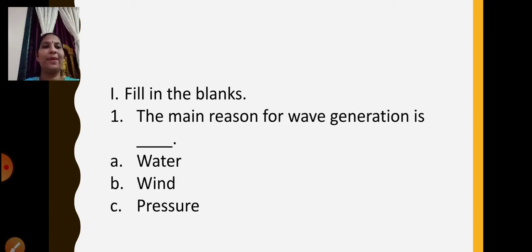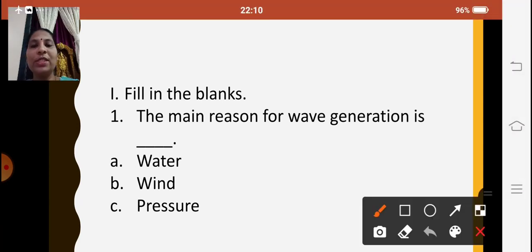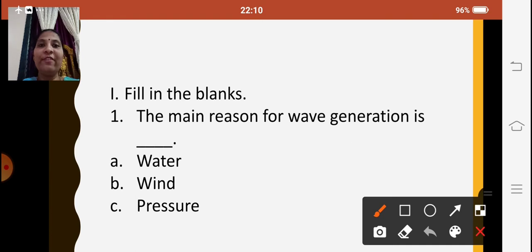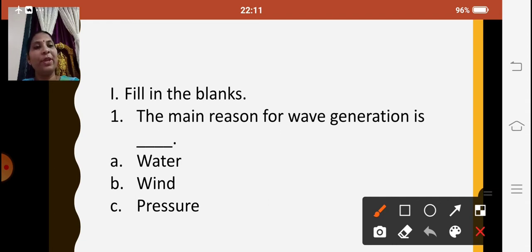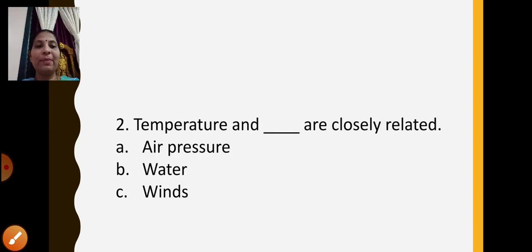The first question is fill in the blanks: 'The main reason for wave generation is blank.' Options given are water, wind, and pressure. You have to click on the correct option, just like your unit test. The main reason for wave generation is wind. This is how your fill in the blanks questions will be asked.